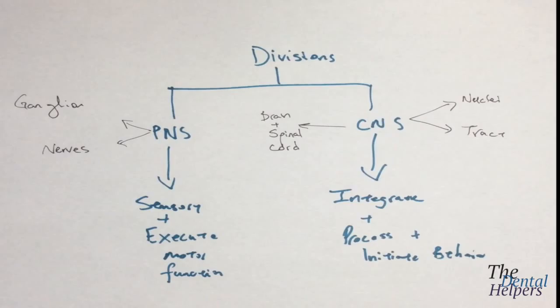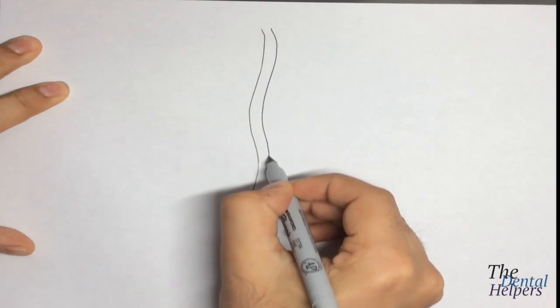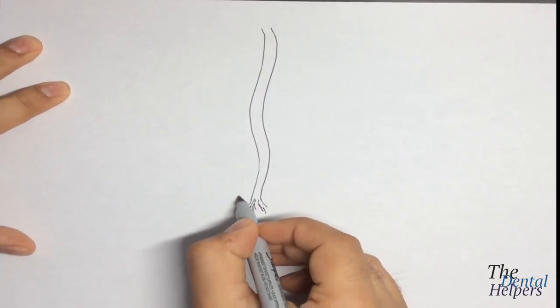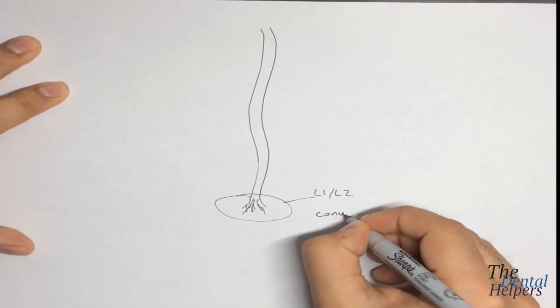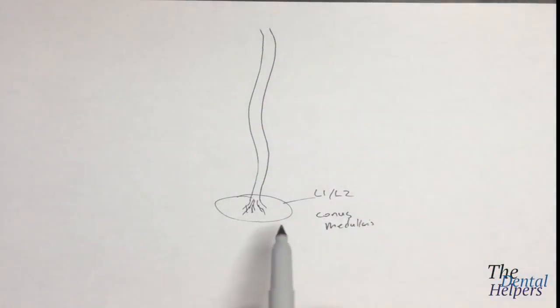Now we're going to look more at the components of the spinal cord. The spinal cord goes down the full length of the vertebrae, and as it reaches the bottom it starts flaring out. This flared area, which is around L1 and L2, is called the conus medullaris, and this is essentially the ending part of the spinal cord.